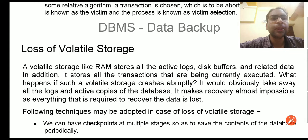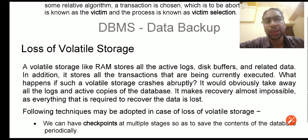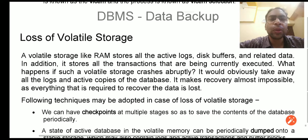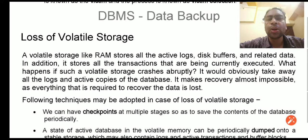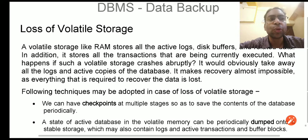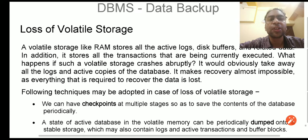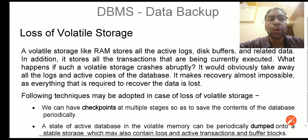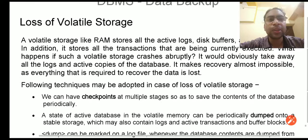We need to have a very strong policy for database backups so that if any such failure or loss occurs, it can be recovered. One type is RAM loss — loss of volatile storage. The RAM stores all active locks, data buffers, and all transactions currently being executed. These transactions are transferred to secondary storage, but if a transaction fails before reaching secondary storage, we must have a backup storage policy.